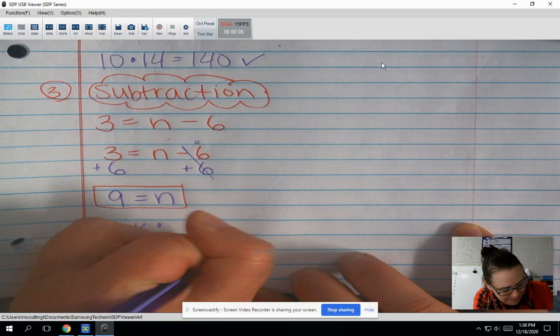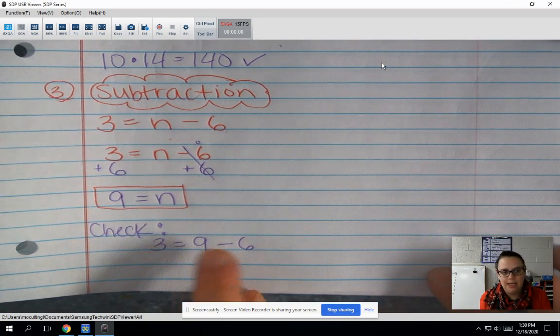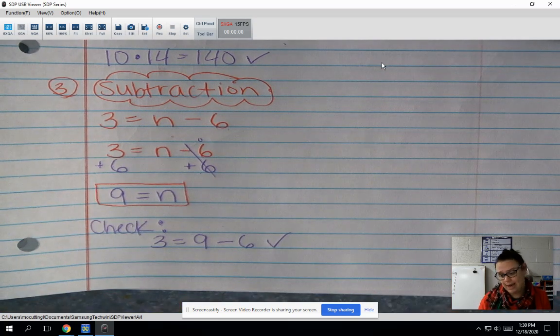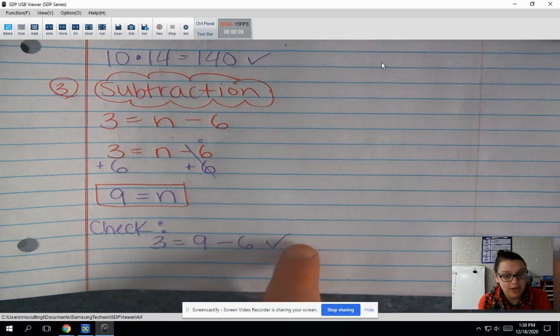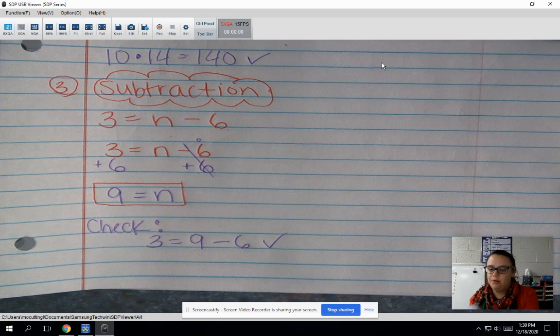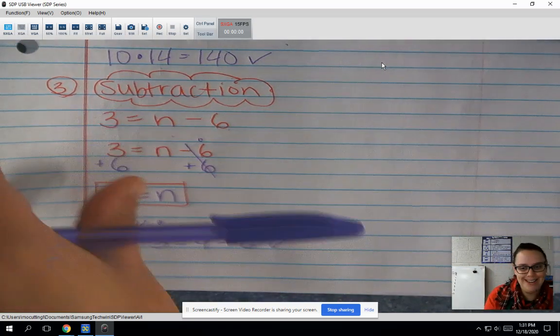3 equals 9 minus 6. Let's see. 9 minus 6. That does give me 3. So I'm going to put my check mark. I know that I got it right. If you are listening at this point, just write a yup right there. Y-U-P exclamation point. Thank you. And our last example.